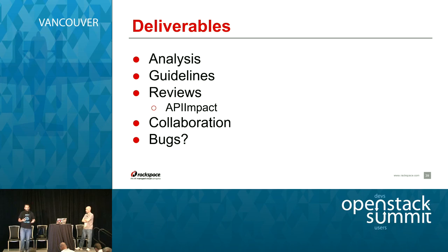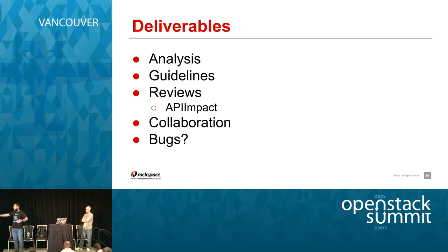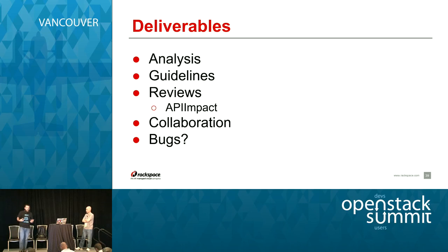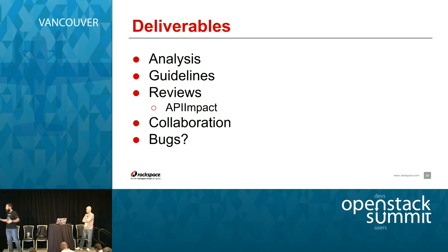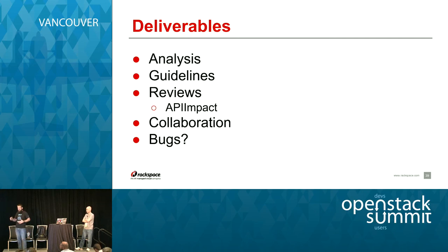The first deliverable is actually doing analysis of the existing APIs — going through Nova, Cinder, Glance, Neutron, and asking: what do all their errors look like? Are they the same? Where are they different? The answer is no, so we need to improve that. Then we create guidelines, which can vary from a simple paragraph on returning a status code for asynchronous creates, to much more complex guidelines around tagging of various resources or consistent errors across all the different services.